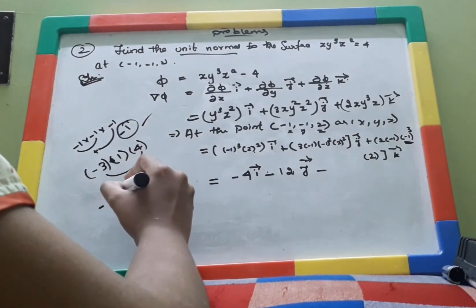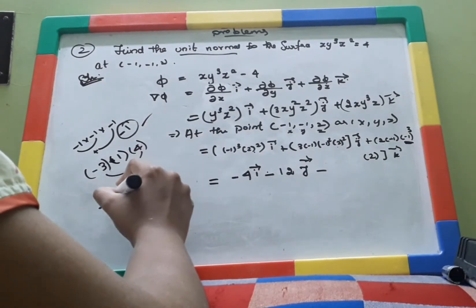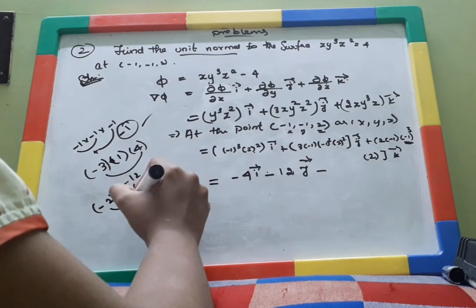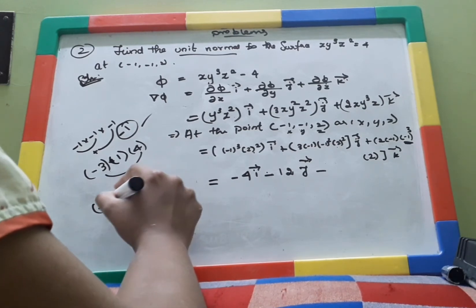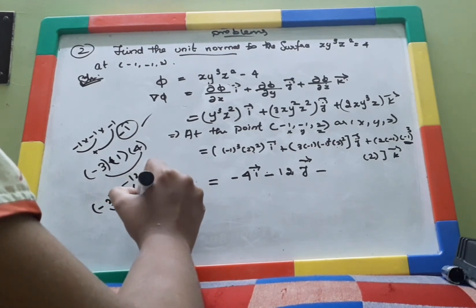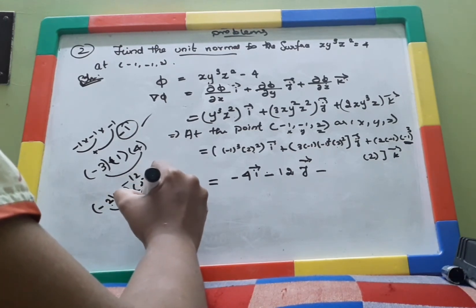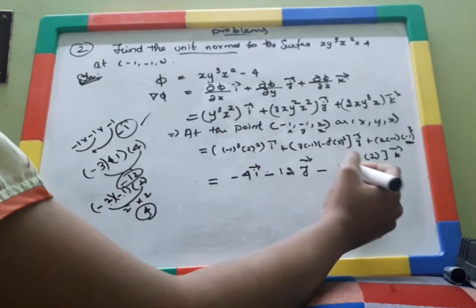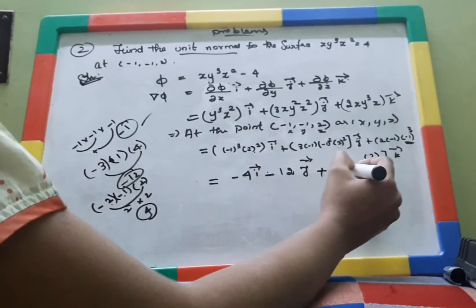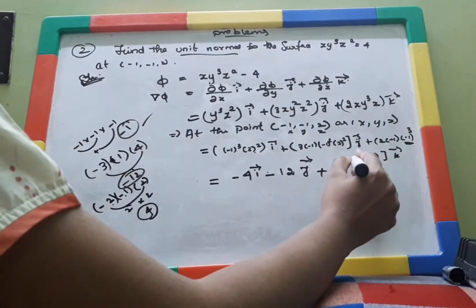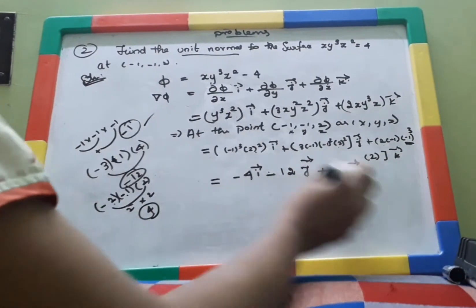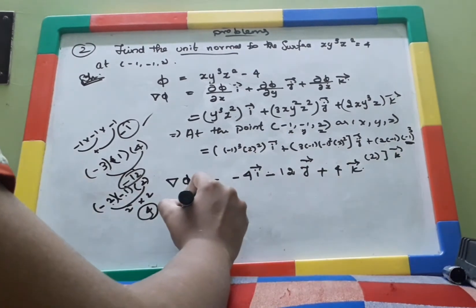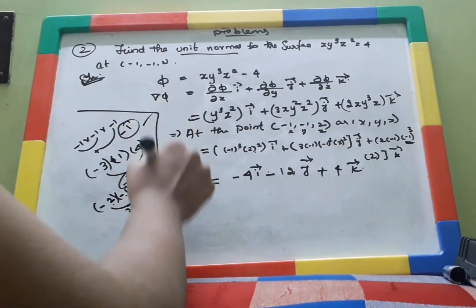For the k̂ component: 2 × (−1) = −2, (−1)³ = −1, so −2 × (−1) × 2 = 4, giving +4k̂. Therefore del ψ = −4î − 12ĵ + 4k̂.